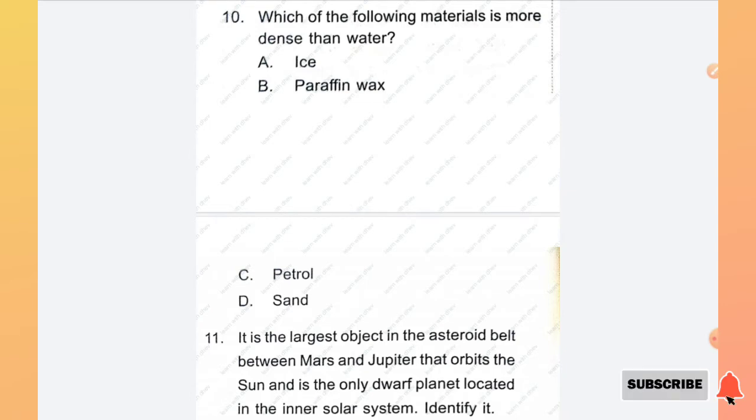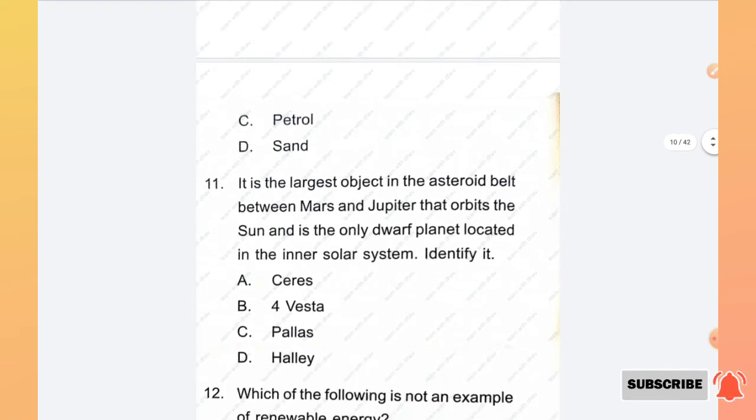Question number 10: Which of the following materials is more dense than water? Options are ice, paraffin wax, petrol, sand. Answer is sand is denser than water. Hence option D is the right answer.